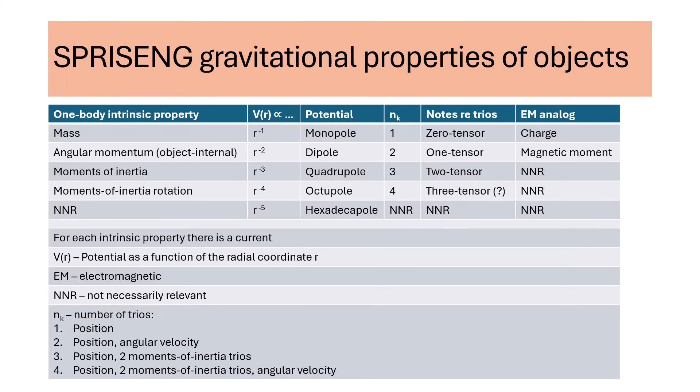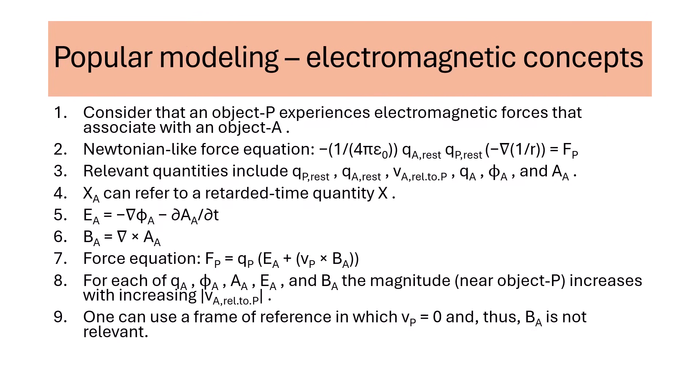Relationships between electromagnetism and special relativity provide a means that we suggest leads to those four gravitational properties. This slide reviews some popular modeling that combines electromagnetism and special relativity. Object P associates with object A the charge Q_A. Object P associates with the electromagnetic field contribution of object A: a charge Q_A, a scalar potential phi_A, a vector potential A_A, an electric field E_A, and a magnetic field B_A. Each of these five quantities increases in magnitude with increasing values of the velocity of object A relative to object P. For our discussion, we plan to use a frame of reference for which object P is not moving. B_A is not relevant.